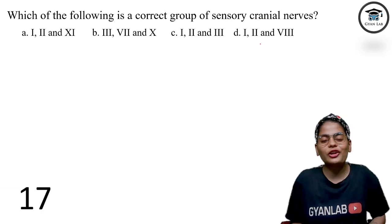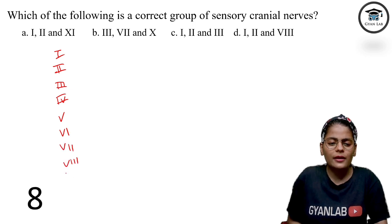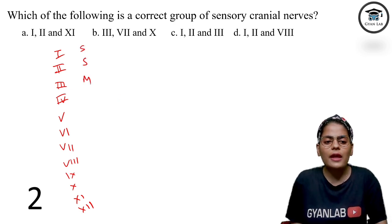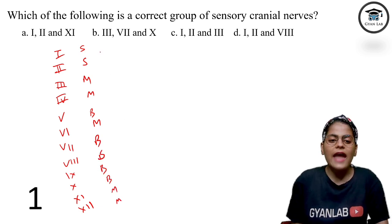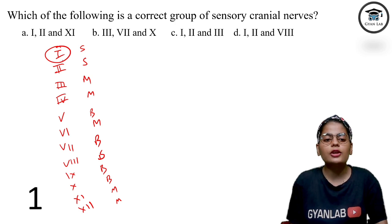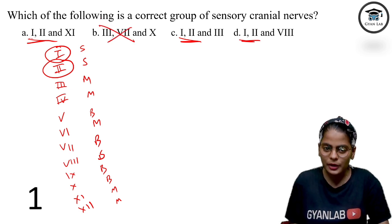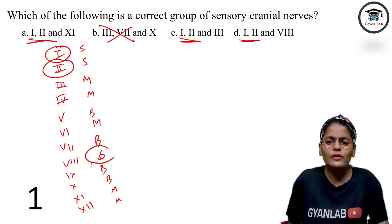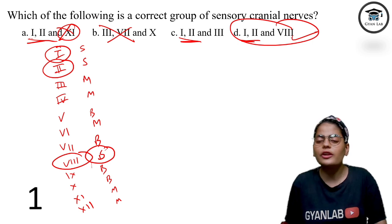Which of the following is the correct group of sensory cranial nerves? I had told you this trick: for the 12 cranial nerves, use the mnemonic 'Some Say Marry Money But My Brother Says Big Brain Matter More.' S means sensory, M means motor or mixed. So nerve number 1 is sensory, nerve number 2 is sensory. Nerve number 8 is also a sensory nerve. Therefore, option number D is the only right answer.